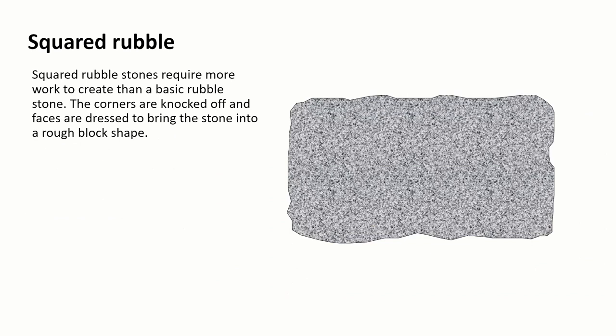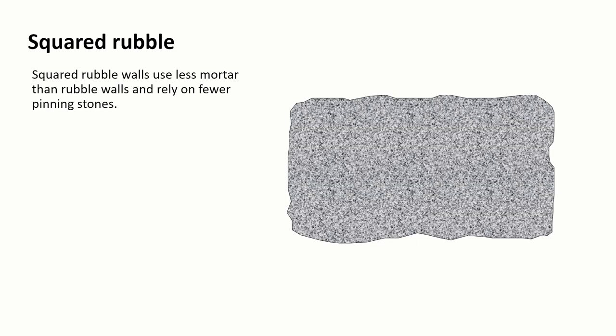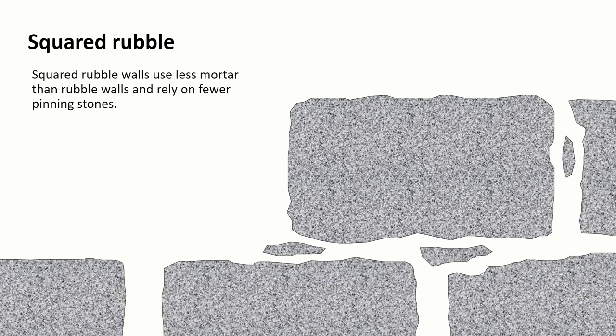If we go up the scale in quality a little bit we get to squared rubble. This is a stone that would require the mason to do a little bit more work to take a basic rubble stone, a quarry stone, and dress it so that the corners were knocked off and the faces were brought to be square. This forms a rough block shape but there's still going to be irregularities in it. As with rubble wall we're still going to be using a significant amount of mortar but not as much as that rubble wall. The gaps between the stones become more regular and there are less pinning stones.